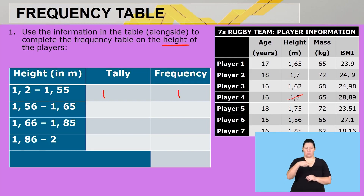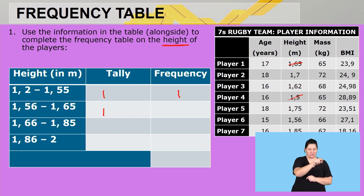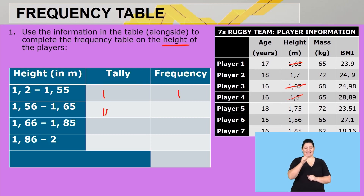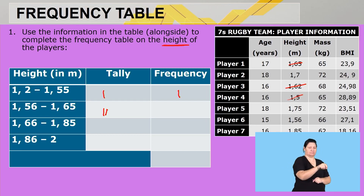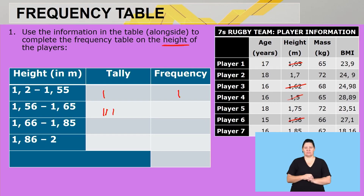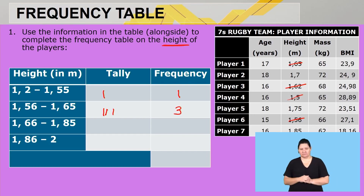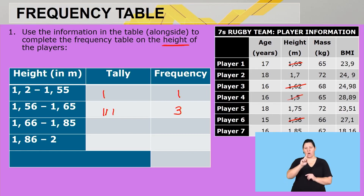Moving to the interval 1.5–1.65m: Player one at 1.65m is within that range, tally one. Player two at 1.7m is too tall. Player three at 1.62m is within range, tally again. Player five at 1.75m is not. Player six at 1.56m is within range — I'll scratch that through. So I count one, two, three; the frequency is three.